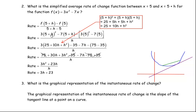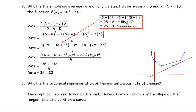We need to square (5+h), which is (5+h) times (5+h). So 5 times 5 is 25, 5 times h is 5h, h times 5 is another 5h, and h times h gives h squared. The two 5h terms are like terms, adding to 10h. So (5+h)² simplifies to 25 plus 10h plus h squared. Distributing negative 7: negative 7 times 5 is negative 35, and negative 7 times h is minus 7h. For f(5), 5 squared is 25 times 3 is 75, and 7 times 5 is 35.